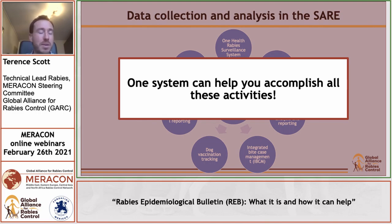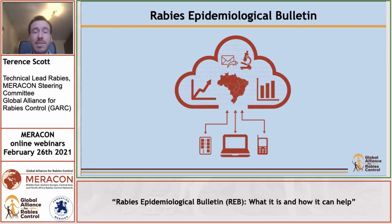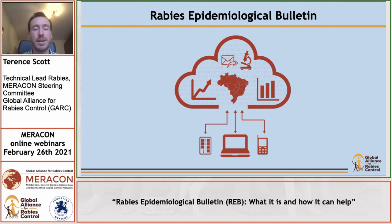The system addresses surveillance at all different levels — from the local level within communities and individual clinics or hospitals, all the way to the national level, giving a national overview of the rabies situation within your country. At the international level, it is possible through the system to share your data with international databases such as the OIE WAHIS and WHO Global Health Observatory. The Epi Bulletin is a comprehensive surveillance system with integrated intersectoral data sharing, facilitating accurate reporting across different sectors.